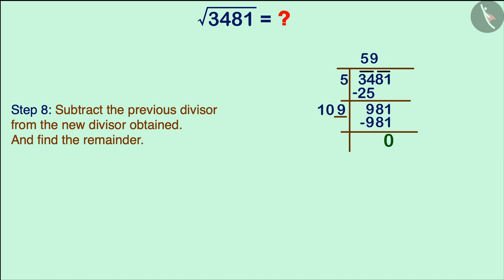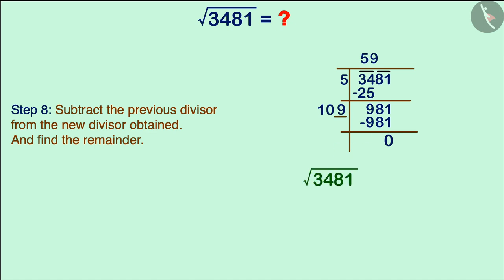Now write it below the new divisor and subtract both numbers. Here we are getting the remainder 0. The remainder is 0 and there are no digits left in the given number. Therefore, this number is a perfect square and the number in place of the quotient is the square root of this number. In this way, we got the square root of 3481, which we write as shown.